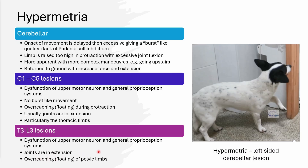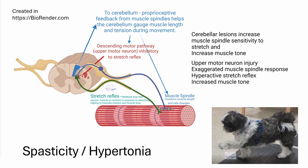In T3 to L3 lesions, this is also disruption of the upper motor neuron and general proprioceptive systems, but only the pelvic limbs are affected — you notice the pelvic limbs reaching far underneath the body with joints in extension and possibly increased tone. This increased tone is an integral part of a hypermetric gait. Unlike the Jack Russell Terrier we saw earlier with joint flexion, a dog with a cerebellar lesion and increased tone can show this goose-stepping gait, with elbow flexion but distal joints held in rigid extension.